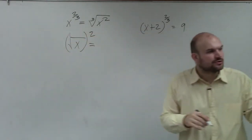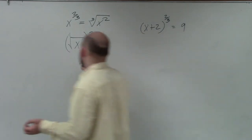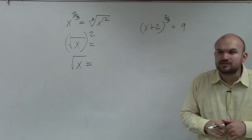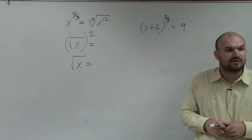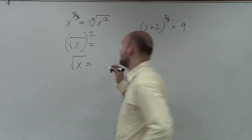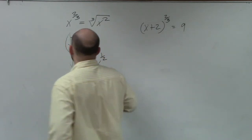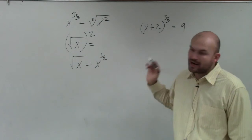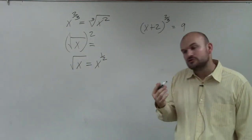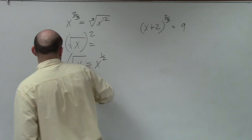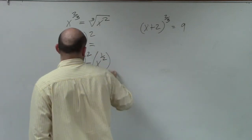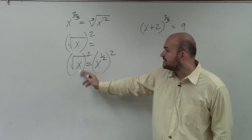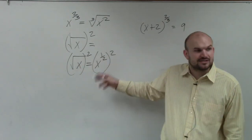What is the square root raised to a rational power? Does anybody know what the square root of x is to the rational power? It's x to the 1/2 power. So x to the 1/2 power is the same thing as the square root of x. So if I was going to get rid of this by squaring it, then squaring the square root is really the same thing as squaring x to the 1/2 power.